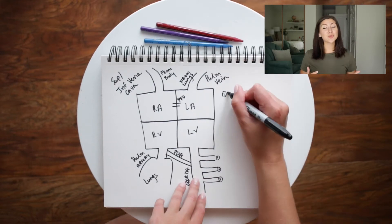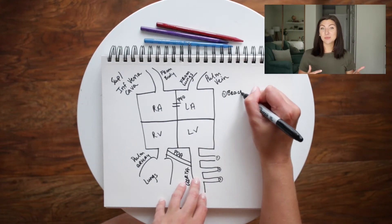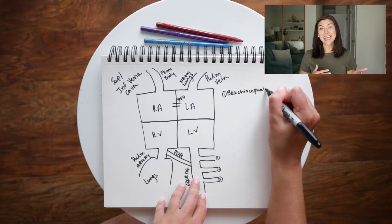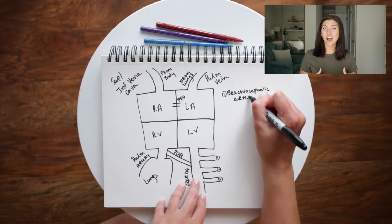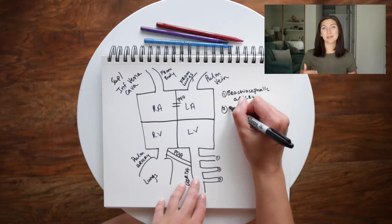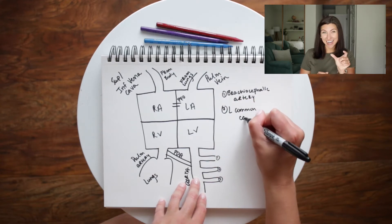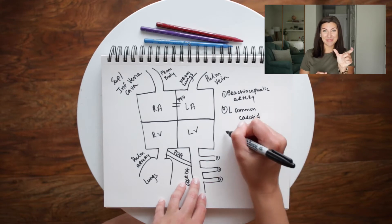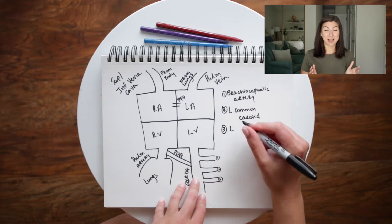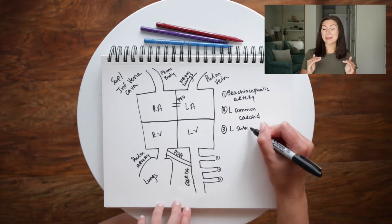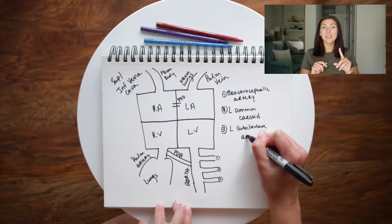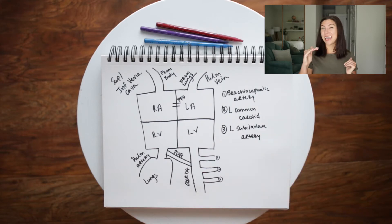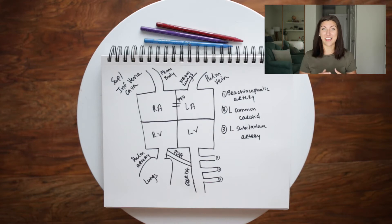When we look at the aorta on this simplified diagram, I want you to notice three branches, and these three branches are very important. The first branch is the brachiocephalic artery. The second is the left common carotid. And the third is the subclavian. I also want you to notice the PDA that I've drawn in this heart structure. The PDA is a connection between the pulmonary artery and the aorta right underneath that first branch of the aorta — the brachiocephalic artery.